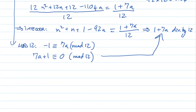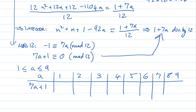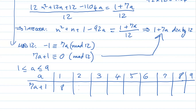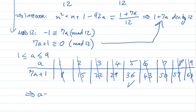Since a is a single digit between 1 and 9, just check all values. Computing 7a + 1 for a = 1 through 9 gives: 8, 15, 22, 29, 36, 43, 50, 57, 64. The only multiple of 12 in this list is 36, which corresponds to a = 5. So the four-digit repdigit must be 5555.